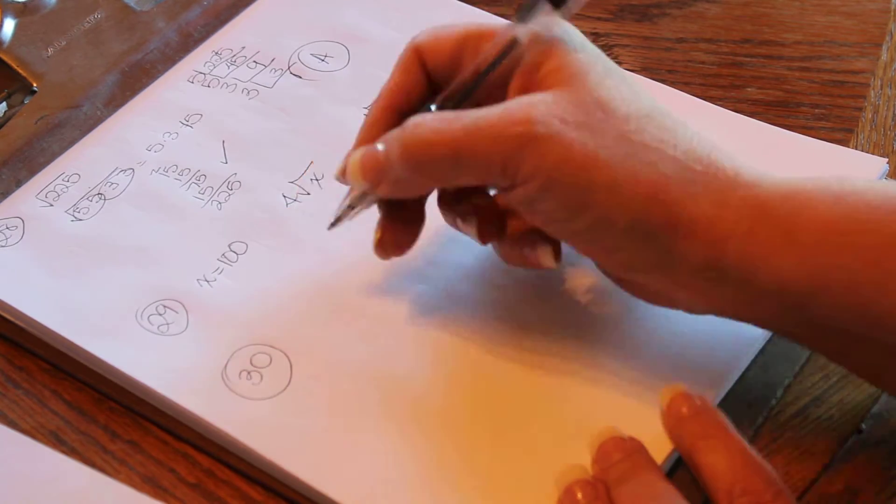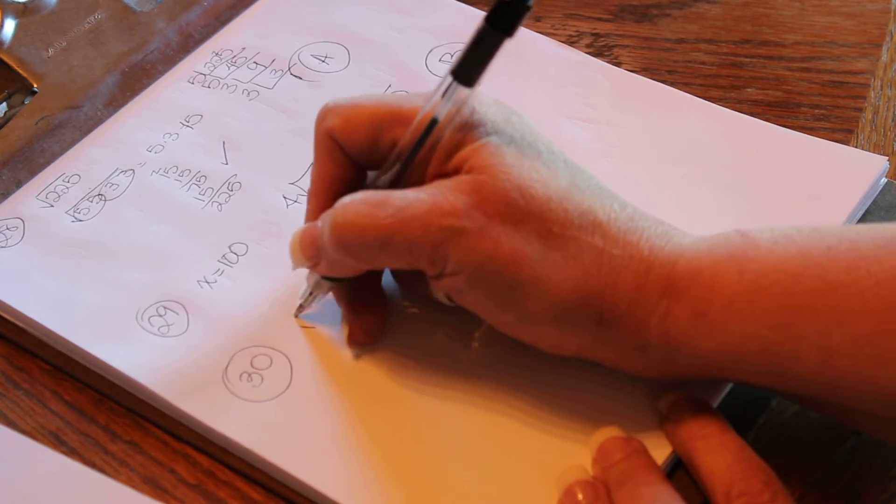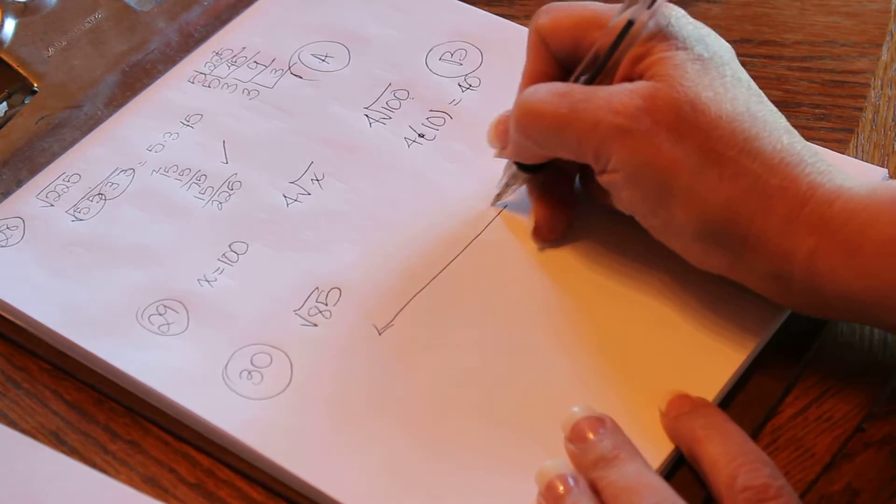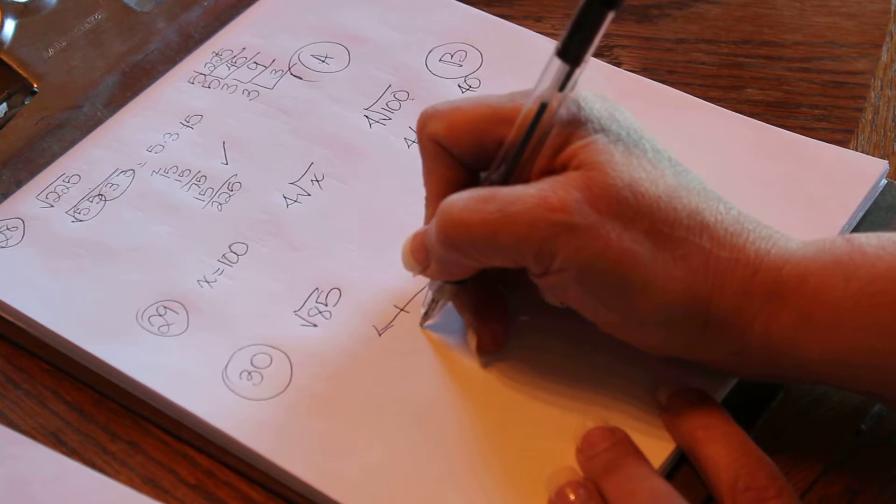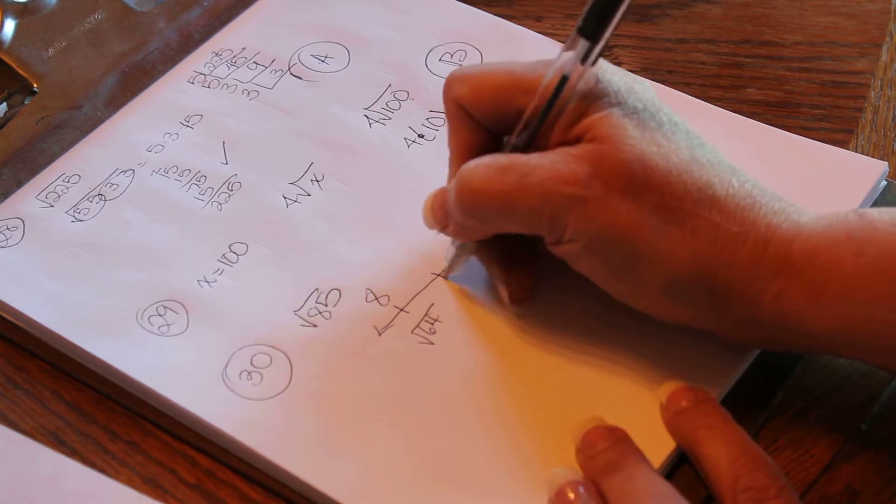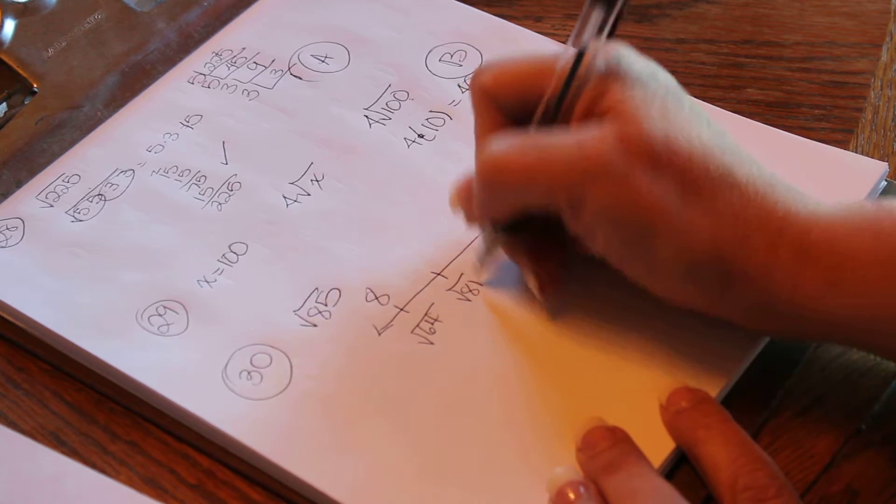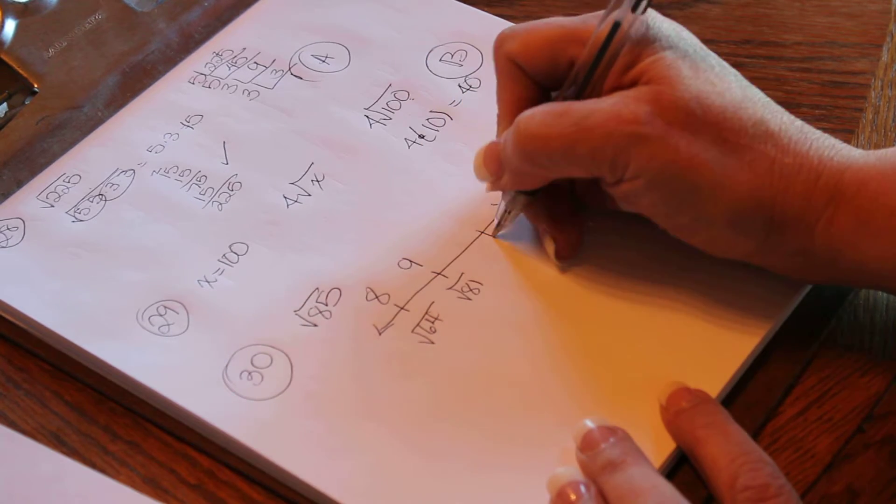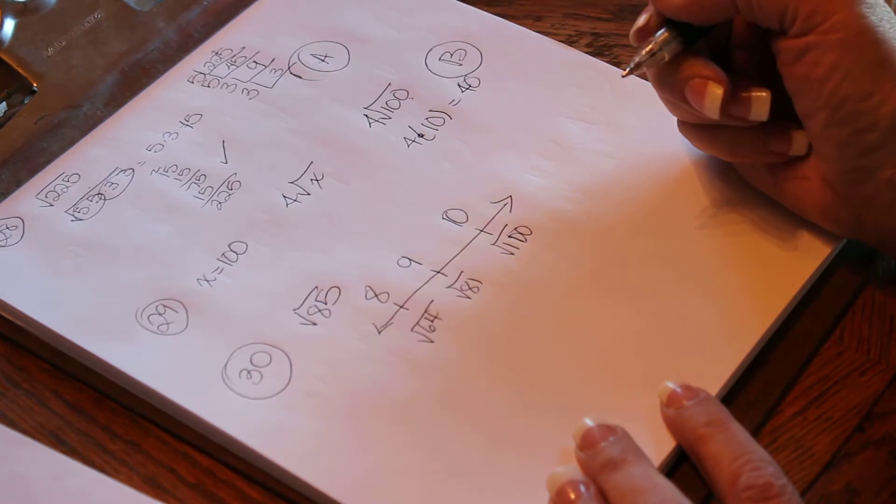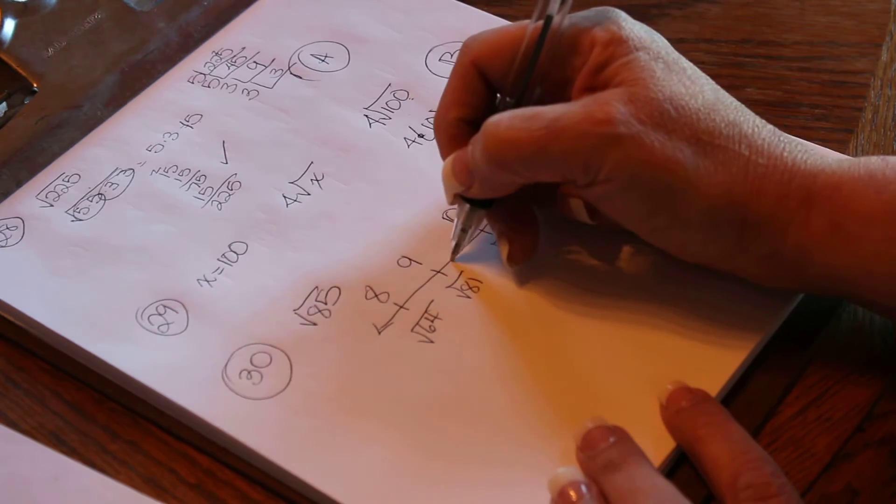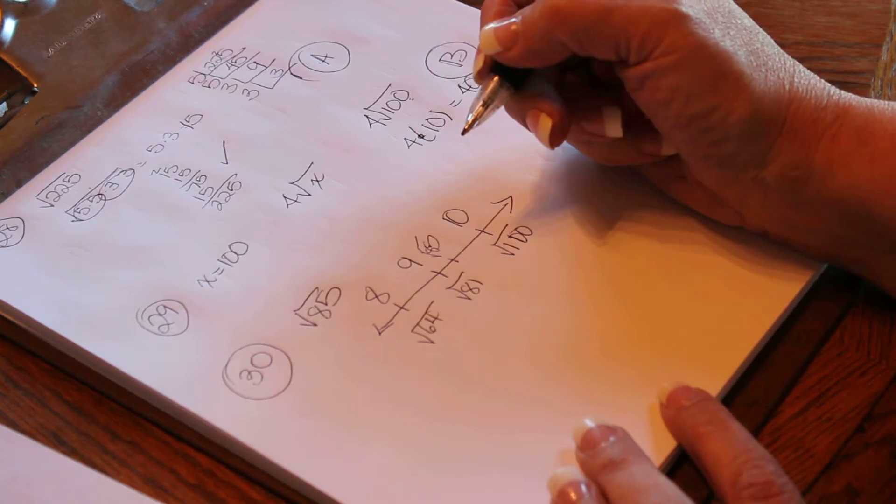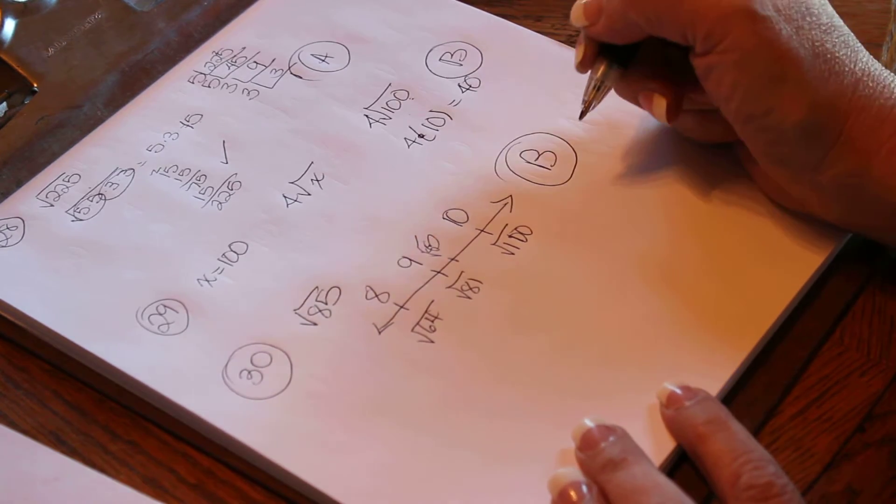So 30 would be the value of root 85 is between what two integers. So let's take a piece of a number line. I've got root 64 here, which is 8. I've got root 81 here, which is 9. I've got root 100 here, which is 10. So root 85 would be here, so it's between 9 and 10. And that's letter B.